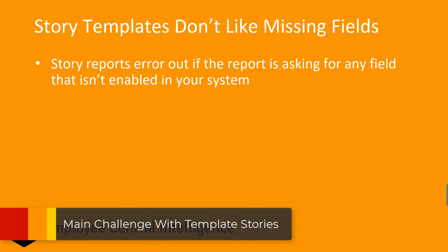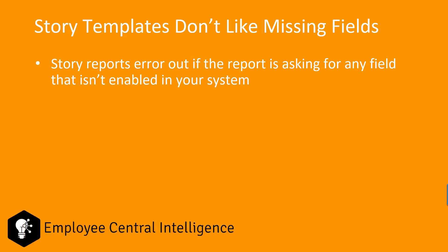One thing I have learned the hard way is that story reports don't like missing fields. Story reports will error out if the report is asking for any field that isn't enabled in your system. So if you try to load in one of these delivered reports and you're missing even one of the fields the report is calling for, that report is likely to error out. Some of these reports will have upwards of 20 fields they're using. In many cases, we're not using some field the report is calling for, and all it takes is one missing field to run into an error. Going through trial and error, disabling fields one at a time, can be quite a challenge.